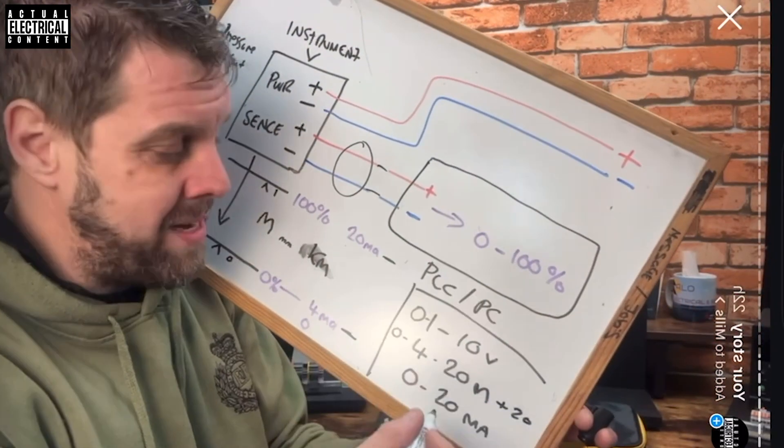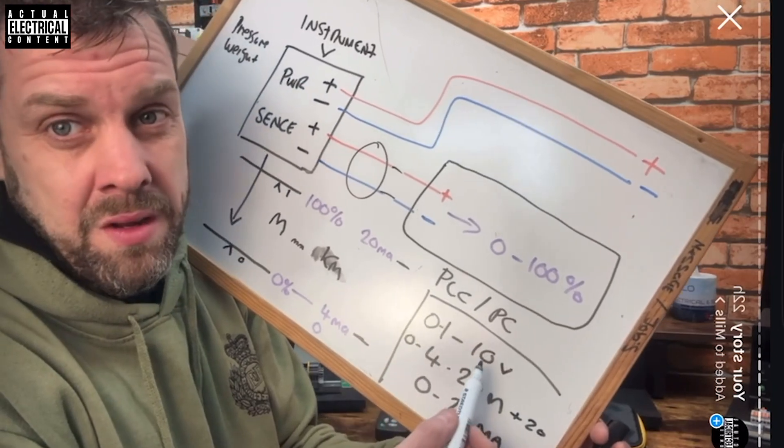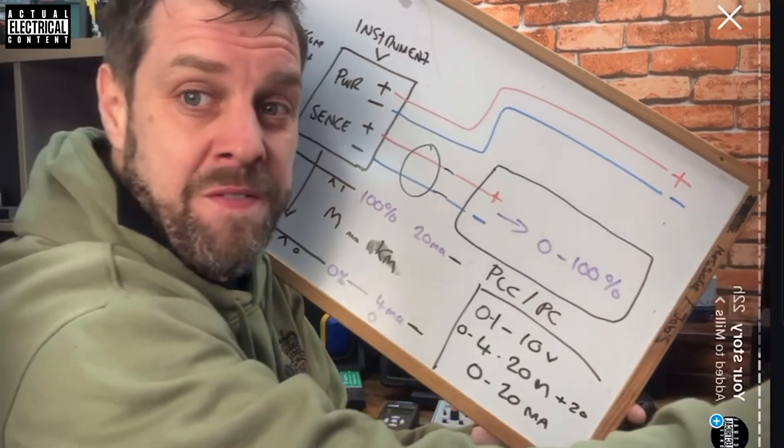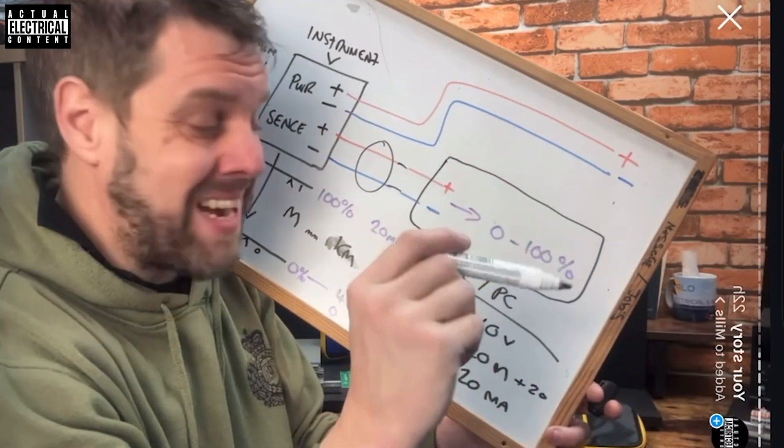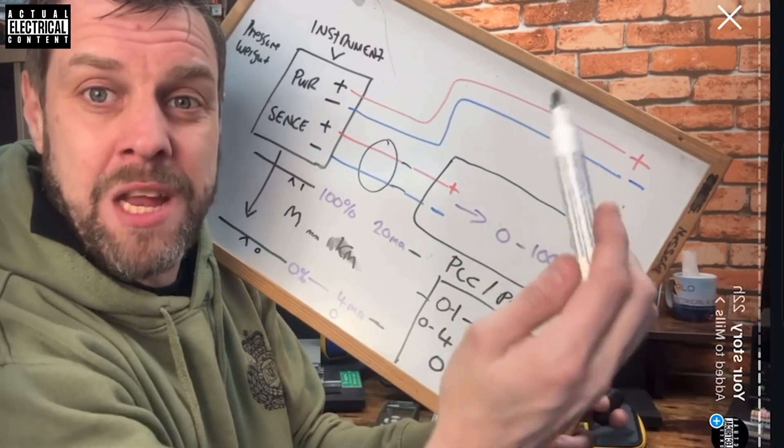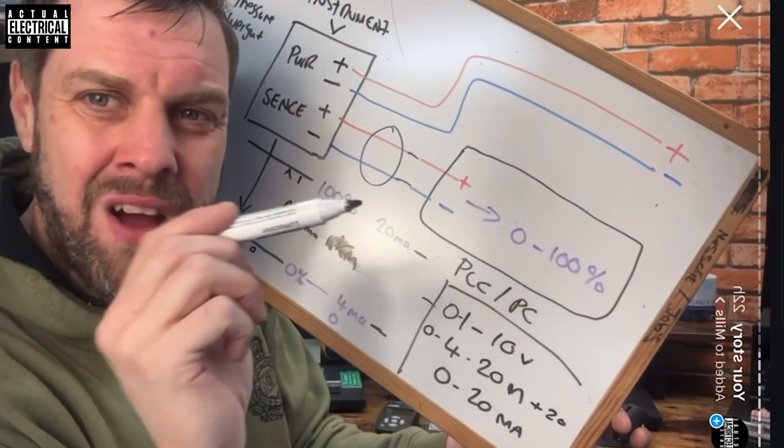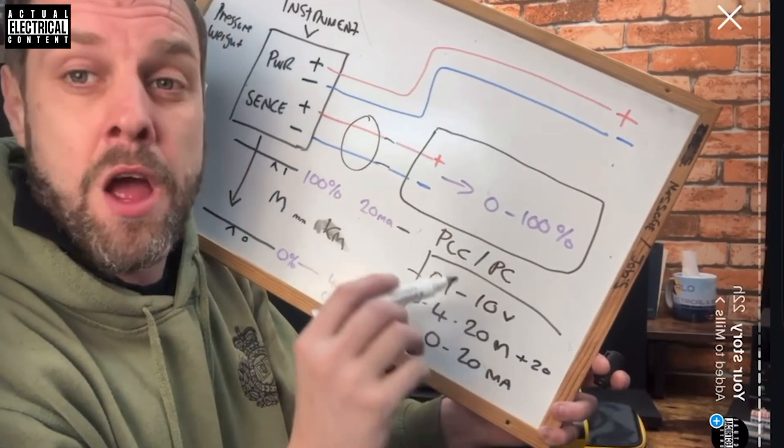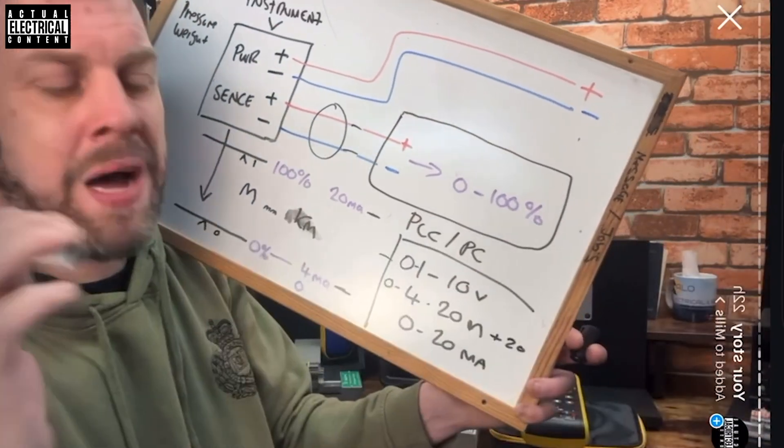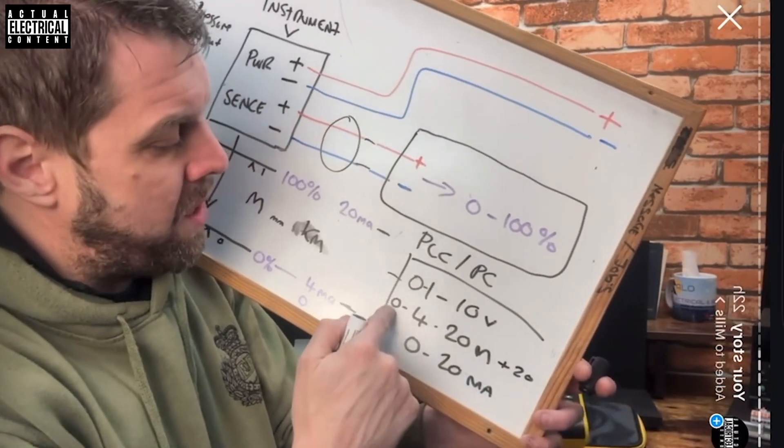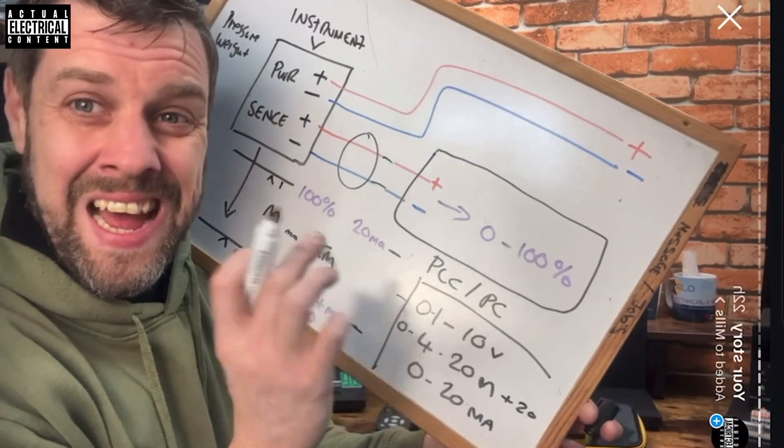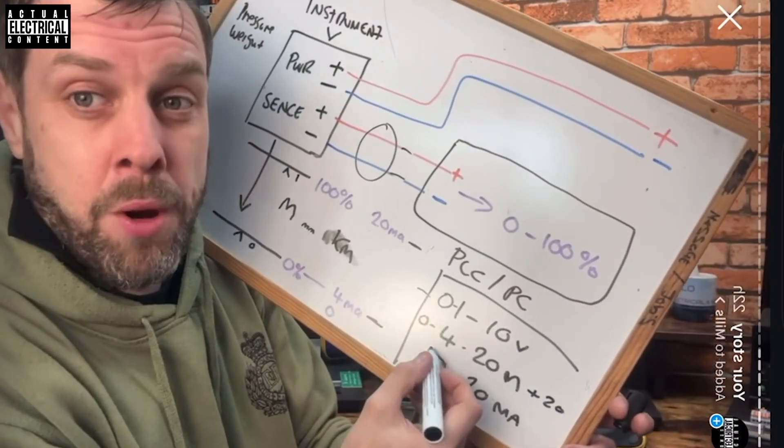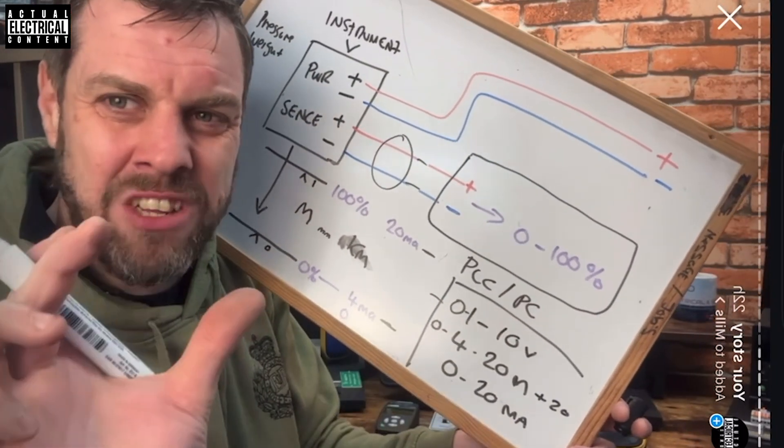If you use four, you've got a base point that is above zero. So if it sees zero it knows it's broken. If it sees four it knows it's zero. If it sees below four it knows it's faulty. If it sees four it knows it's zero. If it sees 20 it knows it's full. And if it sees in excess of 20 it knows it's faulty.